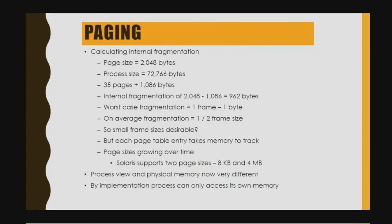In paging, internal fragmentation is calculated as follows. Page size is 2048 bytes, process size is 7766 bytes — that is 35 pages plus 1086 bytes. Internal fragmentation equals 2048 minus 1086, which equals 962 bytes. The worst case fragmentation is one frame minus one byte, and on average fragmentation is half of the frame size.